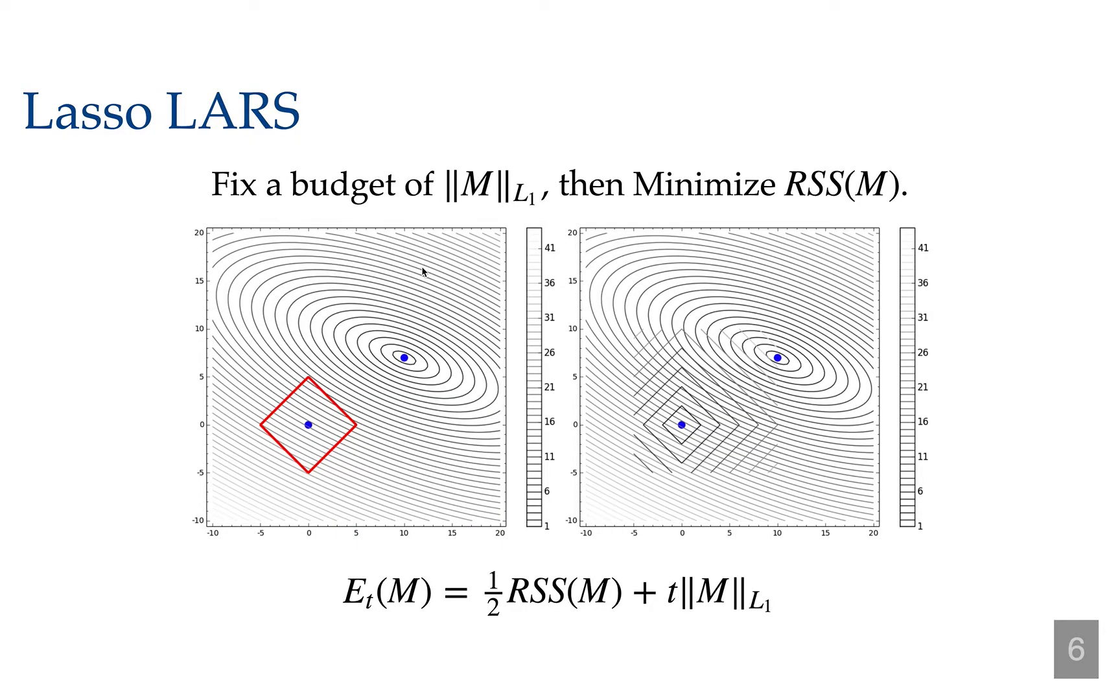Remember the idea of LASSO is to minimize a residual sum of squares error, that is find the most accurate model, under some constraint on the L1 complexity of the model.